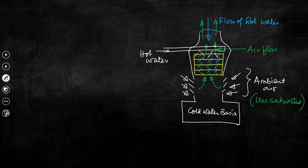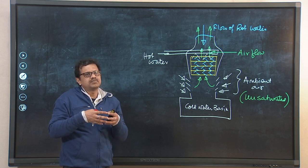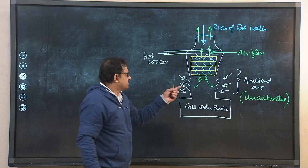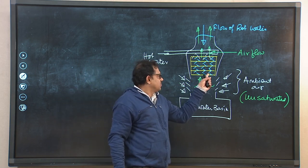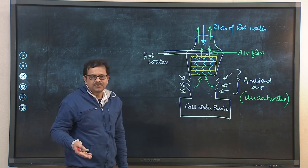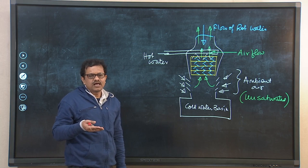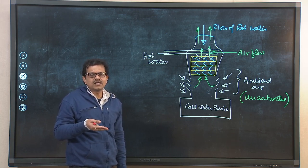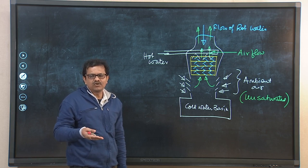These two streams — water and air — mix intimately, and that mixing promotes both heat and mass transfer. Because of this mass transfer, water will be cooled down further through evaporative cooling. As water evaporates, latent heat is taken from the water, its temperature reduces further, and we get more cooling.